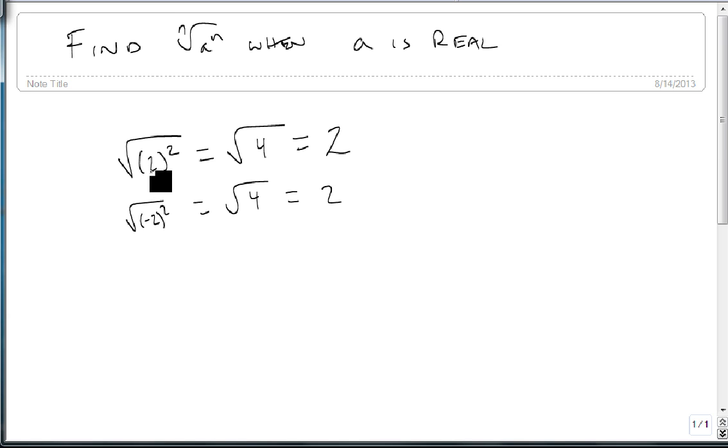When I took the square root of 2 squared and the square root of (-2) squared, I got 2. In other words, when I take the square root of a squared, I get the positive version of a, which means we need the absolute value.